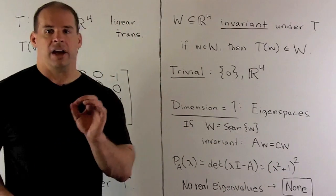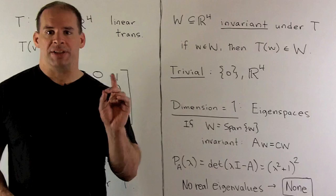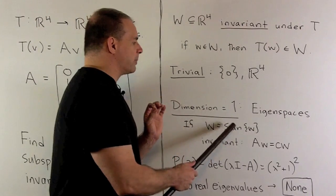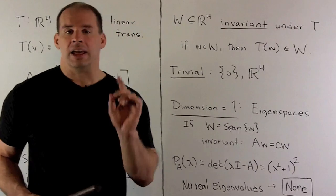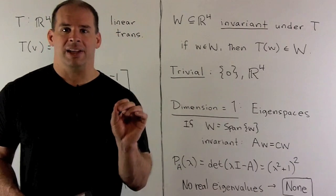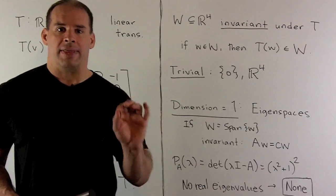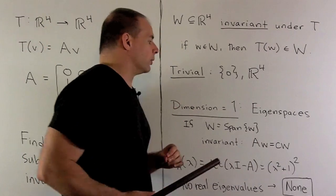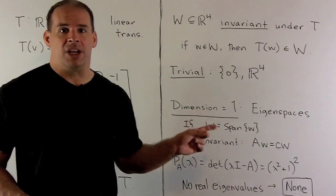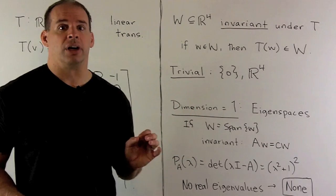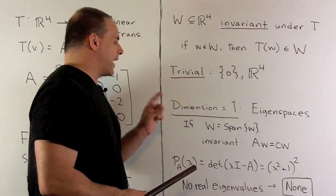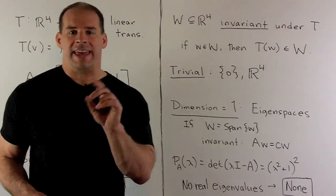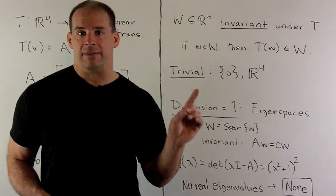For dimension 1, this is going to be a familiar problem. We're just looking for eigenspaces. If we have a one-dimensional subspace that's invariant, I can write this subspace W as just a span of a non-zero vector. If it's invariant, that means A times W has to lie back in our subspace. So, that means it's just going to be some multiple of W. By definition, W is an eigenvector. To find the eigenvectors, we just set up our characteristic polynomial, find the eigenvalues, and then if there are any, we can find eigenvectors.